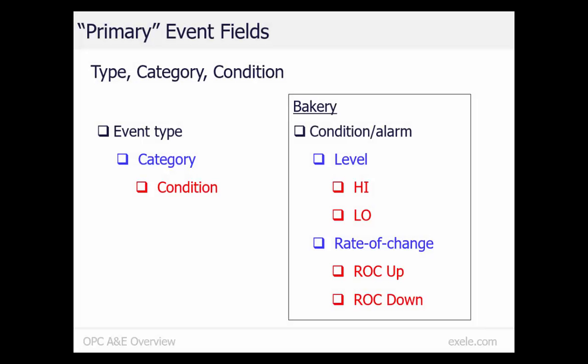There are three types of events. The event type for alarms is called a condition. Our bakery is only generating condition events. Within an event type, the server can define categories of events. Our bakery has defined two categories: level for the high-low alarms, and rate of change for the rate of change alarms. A category can only define conditions if the event type is condition.